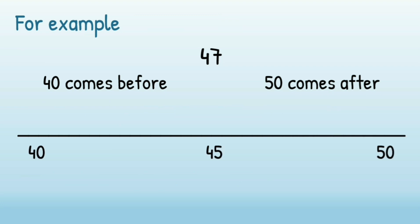If you look at that on a number line, if you've got 40 on the left and 50 on the right, you'll have 45 in the middle and 47 would go between 45 and 50. So 47 is closer to 50. So we'd say that rounds up to 50.